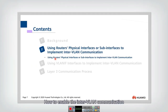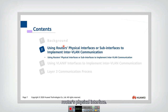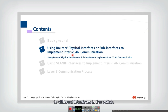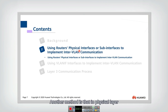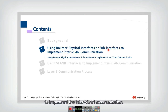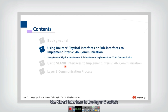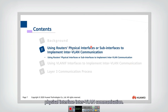How to enable inter-VLAN communication? There are three different kinds. The first one is to use the router's physical interfaces — the router has two interfaces connected with two cables to two different interfaces in the switch. Another method uses only one physical interface but separates it into several sub-interfaces. The second method is to use the VLAN interface in a layer 3 switch. We will first introduce the physical interface inter-VLAN communication.